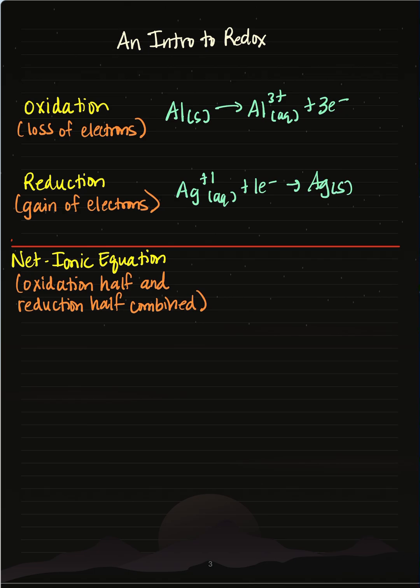Before I can add up my two half reactions to give my net ionic equation, I need to balance my electrons. I cannot lose three electrons and then gain one.